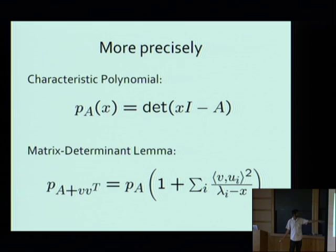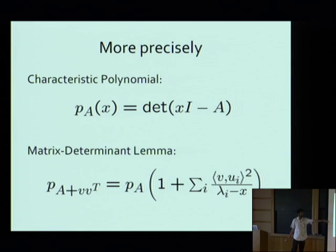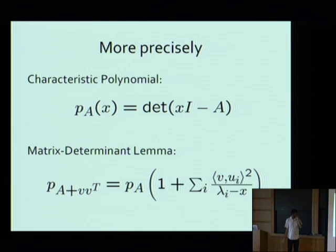We can get more precise information about where the new eigenvalues lie by looking at the characteristic polynomial. The characteristic polynomial of A plus VV^T is the characteristic polynomial of A times the quantity 1 plus the sum over i of (U_i^T V)^2 divided by (lambda_i minus x), where U_i are the eigenvectors and lambda_i are the eigenvalues of A, and V is the vector being added.